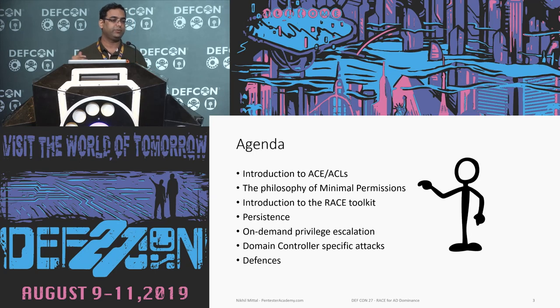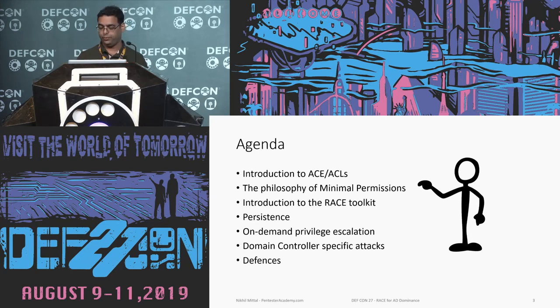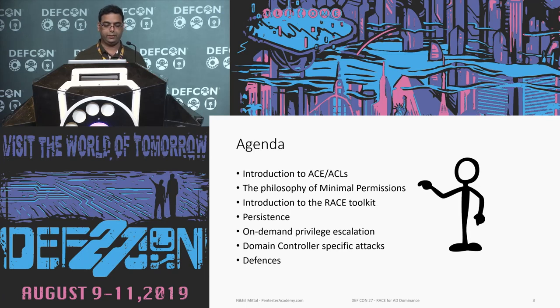Then persistence — how we can use different methodologies and commands from RACE for persistence and on-demand privilege escalation. These will be covered both for domain controller and member machines in Active Directory. Then we look at attacks specific to the domain controller, and then a quick look at defenses, past work, future, et cetera.